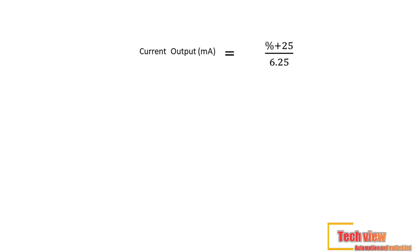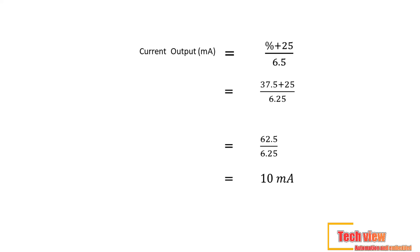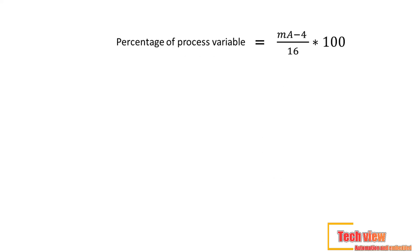We can use another formula to convert process variable to milliamps: milliamps equals percentage plus 25, divided by 6.25. Using the same problem — LRV and URV the same as before, current process variable is 75 bar — the percentage is also the same: 37.5. Applying the new equation: milliamps equals 37.5 plus 25, divided by 6.25, equals 62.5 divided by 6.25, equals 10 milliamps. We got the same result as before.